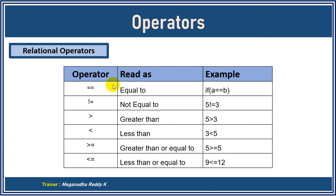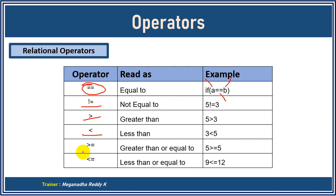So once again: relational operators are used to compare two operands — this is an operand, this is an operand, and this is an operator. Double equals is used to compare whether two values are equal or not. Not equals, greater than, less than, greater than or equal to, and less than or equal to.